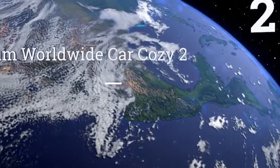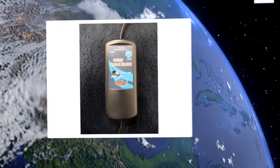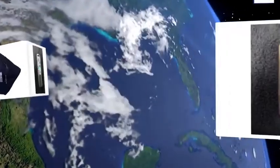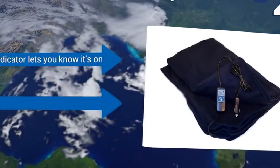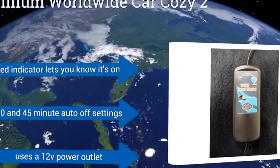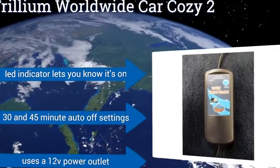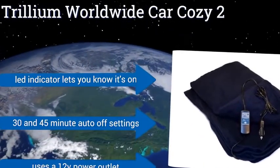At number two, the affordable Trillium Worldwide Car Cozy 2 is available in dark navy blue or classic red plaid, both of which hide unsightly stains that can happen too easily on a family road trip. The extra-long eight-foot cord is convenient for plugging in from the back seat too. It boasts an LED indicator that lets you know it's on, and 30 and 45-minute auto-off settings. It runs on 12-volt power.